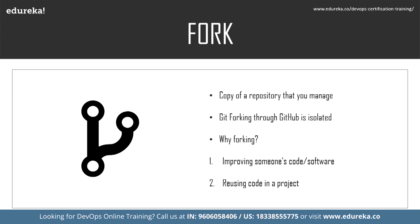This process does not have any effect on the original repository code, also called the upstream repository. Git forking through GitHub is a process isolated to GitHub — whenever a git fork occurs, the repository and the code remains confined to the user's GitHub account, with no effect on the local machine or the involvement of git in any of the process. So why do we need to use forking?